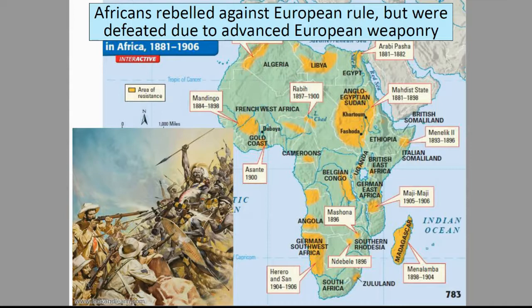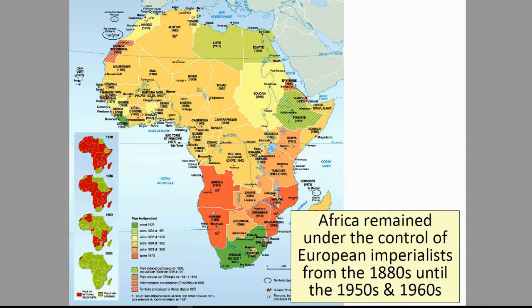Africans rebelled against European rule, but were defeated due to advanced European weaponry. Africa remained under the control of European imperialists from the 1880s until the 1950s and 60s.